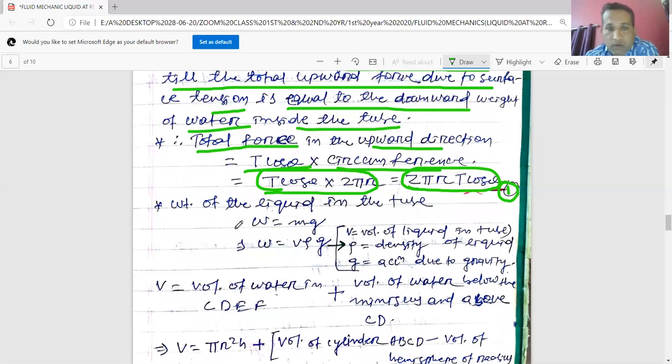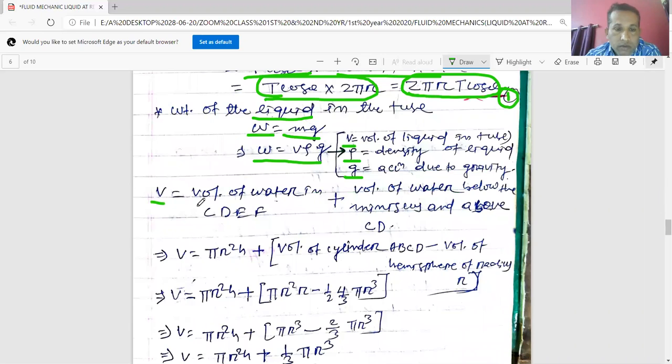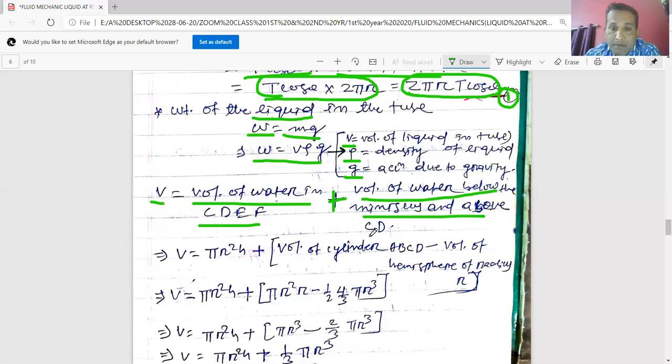Now, weight of the liquid we will want to find out. W equals mg we know. W equals Vρg, where V is volume of liquid, ρ is your density, and g is your acceleration due to gravity. We can find out volume of water in the cylinder CDEF plus volume of water below the meniscus and above CD. So volume of the cylinder will become πr²h, and volume of water below the meniscus and above CD can be achieved by volume of cylinder ABCD minus volume of hemisphere.